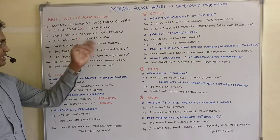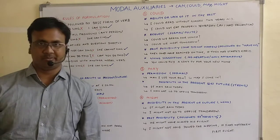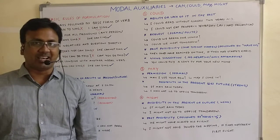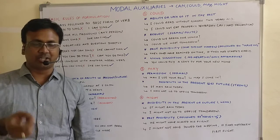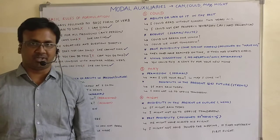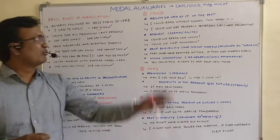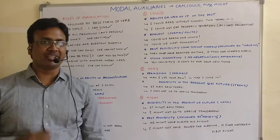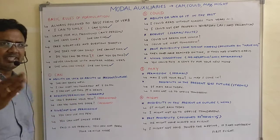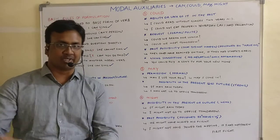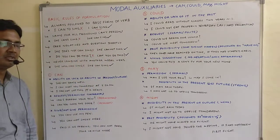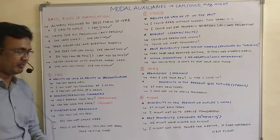Third rule: while forming negatives and questions, you don't need any other helping verbs. In the sentence 'I sing,' to make it negative I say 'I do not sing,' using the auxiliary 'do.' But with modal auxiliaries, they can take negatives directly. For example, 'she can sing' becomes 'she cannot sing.' You don't say 'she does not can sing' — that is wrong. The same holds true for could, may, might, and any modal auxiliary.